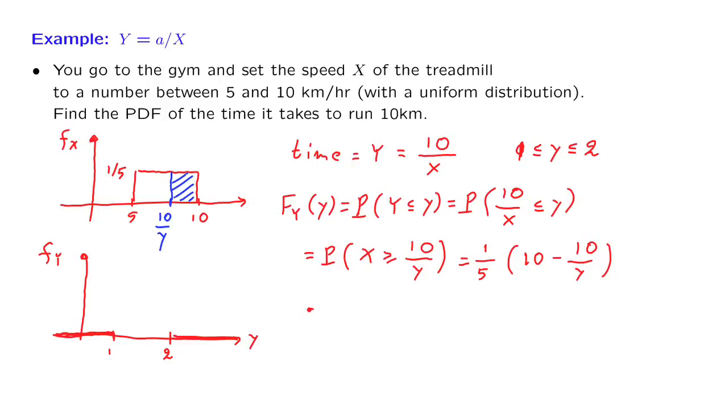To find the PDF of y, we just take the derivative. And we get 1 fifth times the derivative of this term, which is minus 10 divided by y squared. But when we take the derivative of 1 over y, that gives us another minus sign. The two minus signs cancel. And we obtain 2 over y squared. And if you wish to plot this, it starts at 2. And then as y increases, the PDF actually decreases.